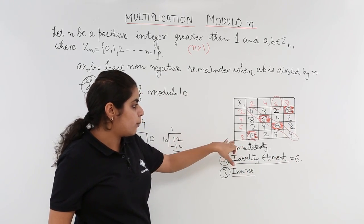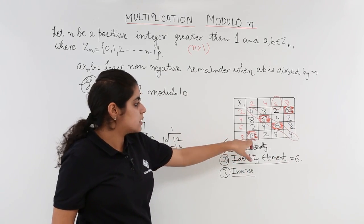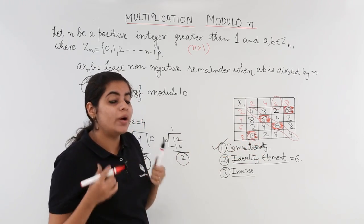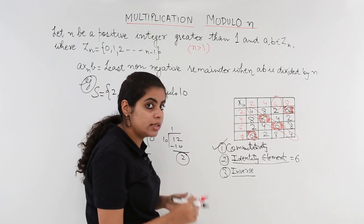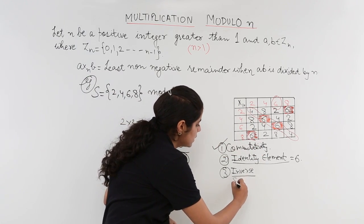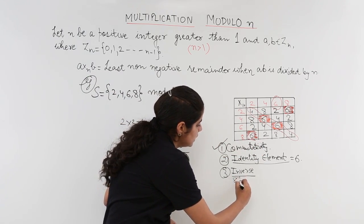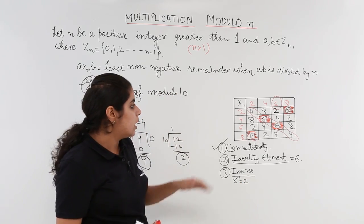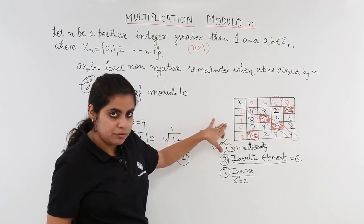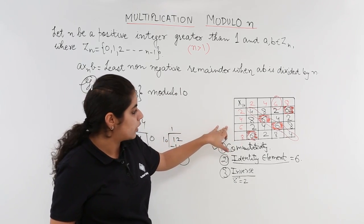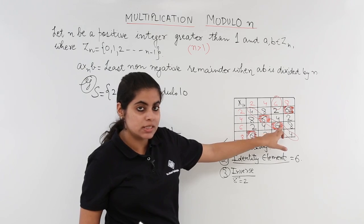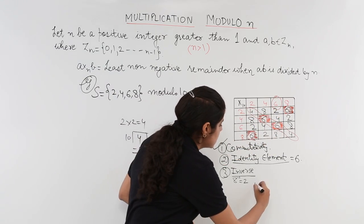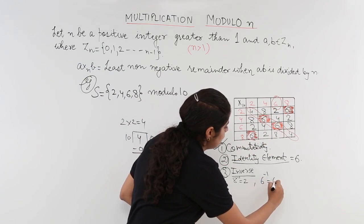Moving from 8, I find 6 here horizontally and when I look above, I have 2. So 8 and 2 are the inverses of each other. That means 8 inverse is equal to 2. Similarly, I move a step above, I look at 6. Horizontally move, find here 6. Look vertically above, find here 6. That means 6 is the inverse of 6.